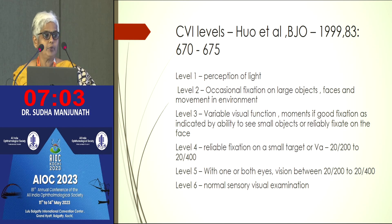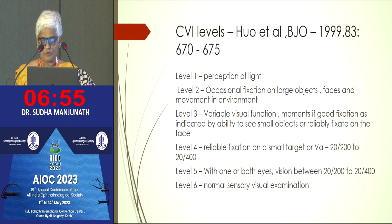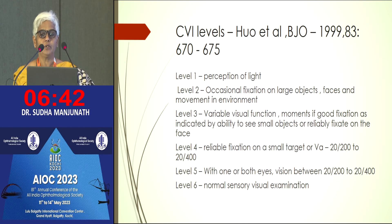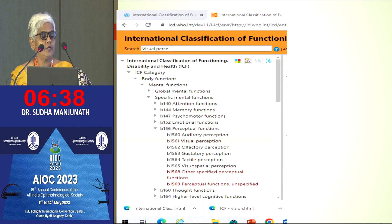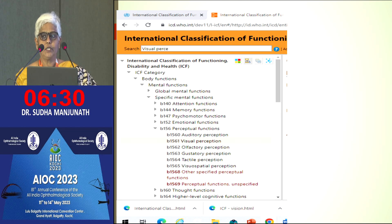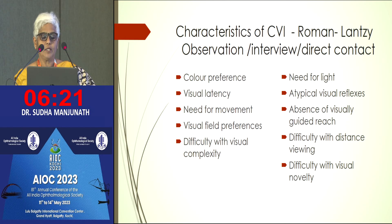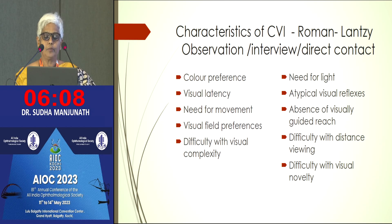CVI levels have been defined by different people in different ways. When you tell somebody that their child has 20/200 or 6/60 level vision, it really means nothing much to the therapist or teachers handling these children day to day. People working in the field of developmental delay now prefer grading based on the International Classification of Functioning and Disability. Dr. Christine Roman-Lansi had also defined the 10 characteristics of CVI, documented by observation, direct examination, and by speaking to parents.